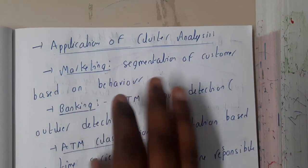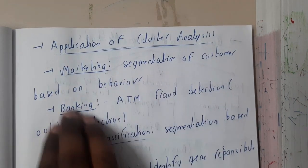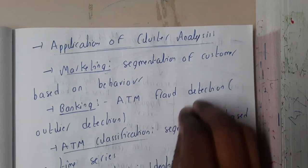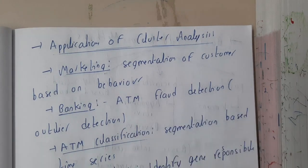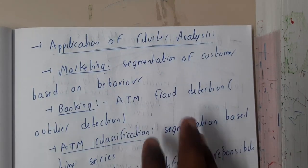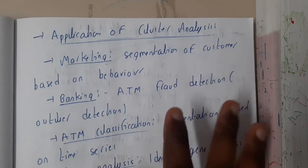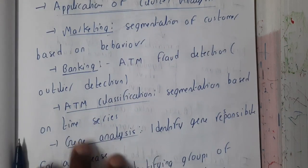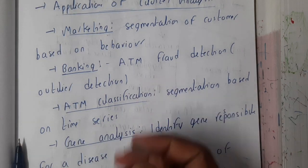In marketing, segmentation of customers is based on their behavior. We want to separate the customers based on their behavior: he will buy electronics, he will buy groceries, he will buy vegetables, he is a non-veg guy, like that. That is nothing but market segmentation. Similarly in banking, any kind of fraud detections can be done, and ATM classification.